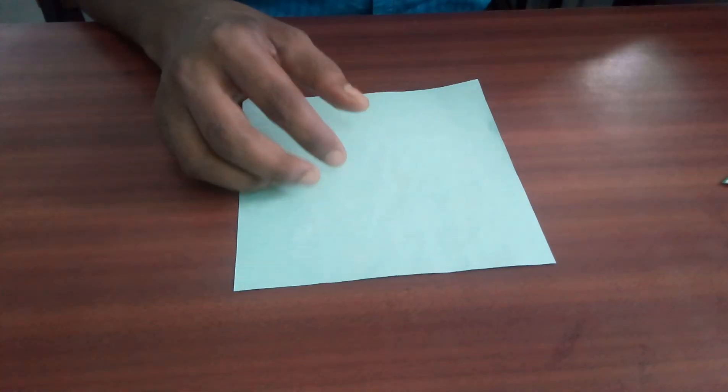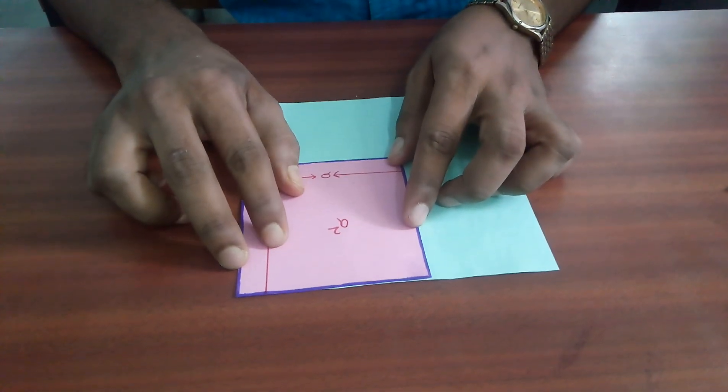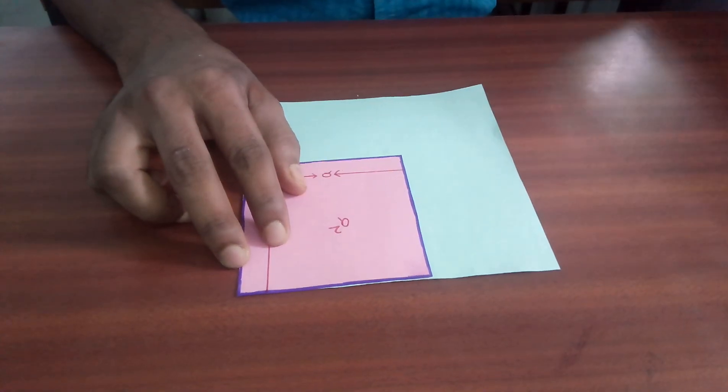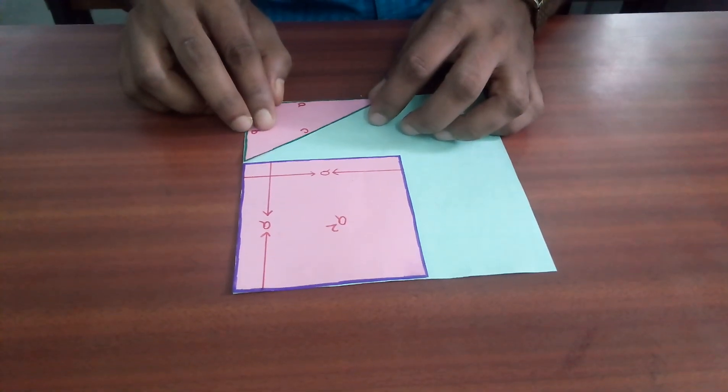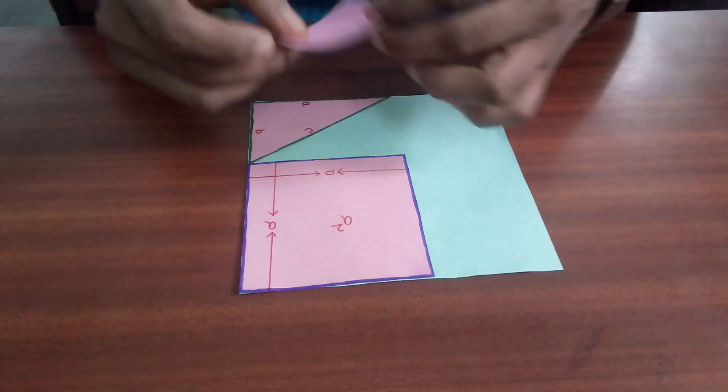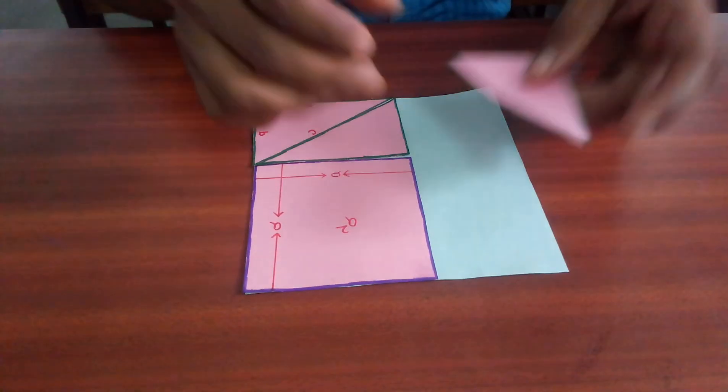Now, we will take another piece of paper and we will place the square first with side A, square with side A unit. Next, we will place all four triangles like this way. First, this two and secondly,